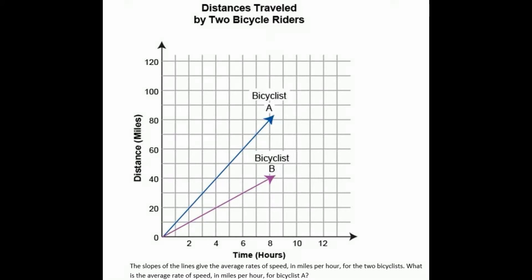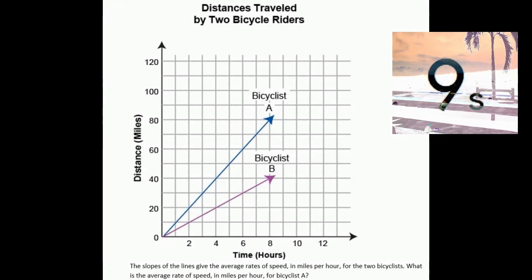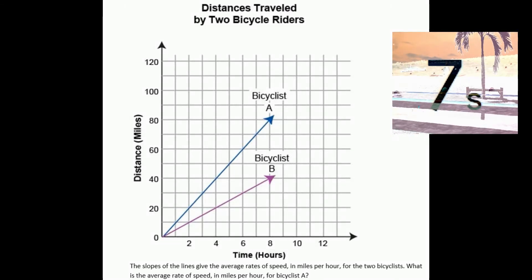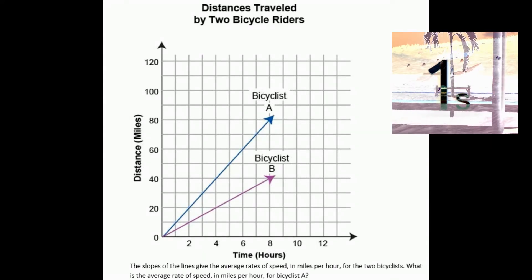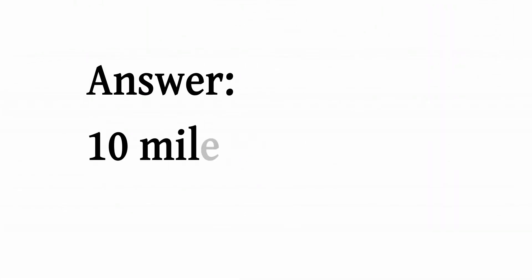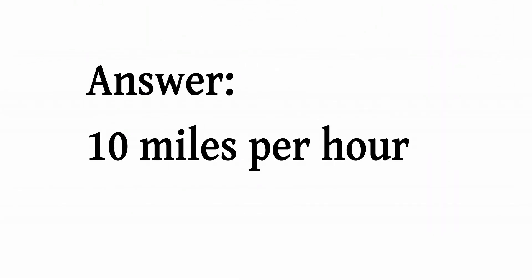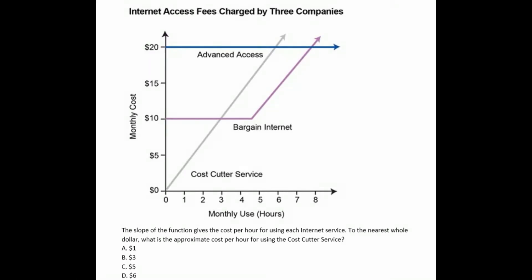Next: distances traveled by two bicycle riders — distance in miles and time in hours — for bicyclist A and bicyclist B. The question is: the slopes of the lines give the average rates of speed in miles per hour for the two bicyclists. What is the average rate of speed in miles per hour for bicyclist A? The answer is 10 miles per hour.